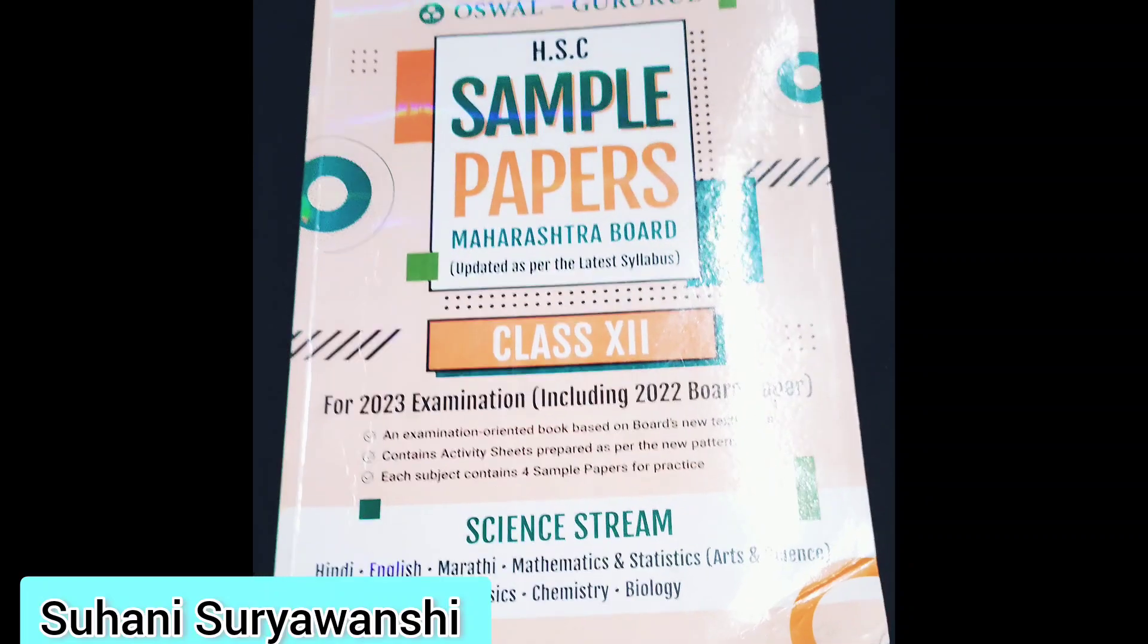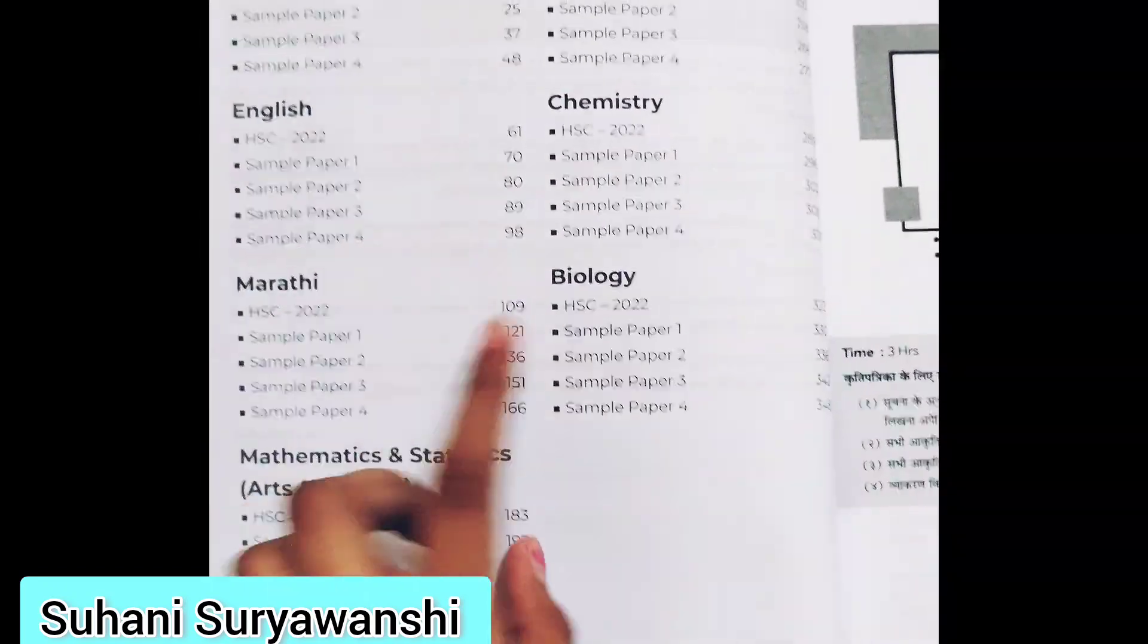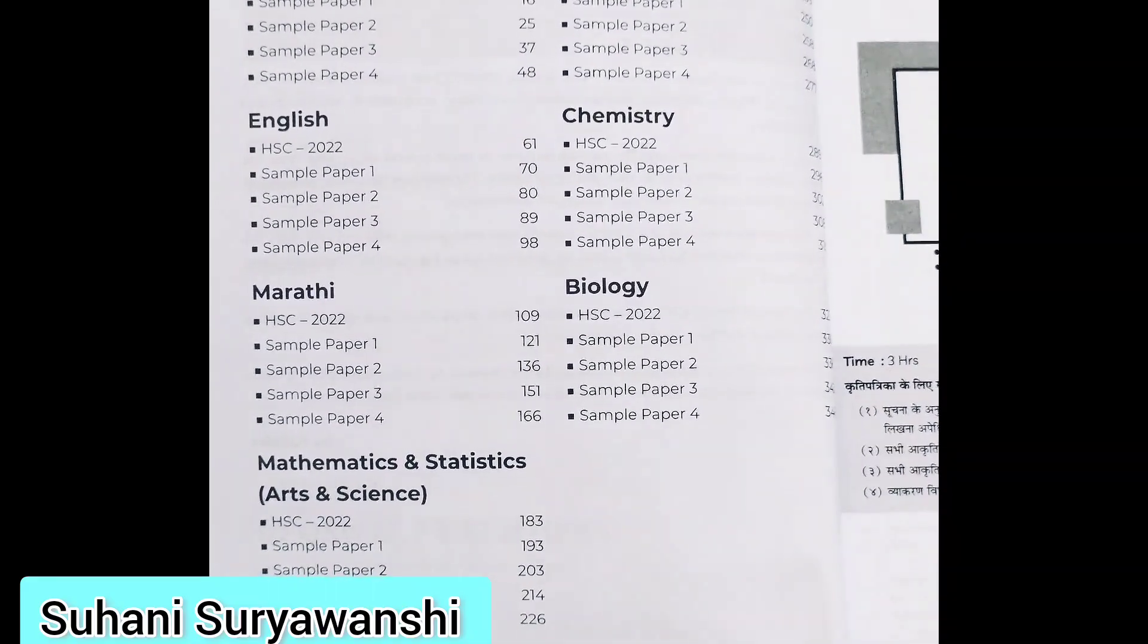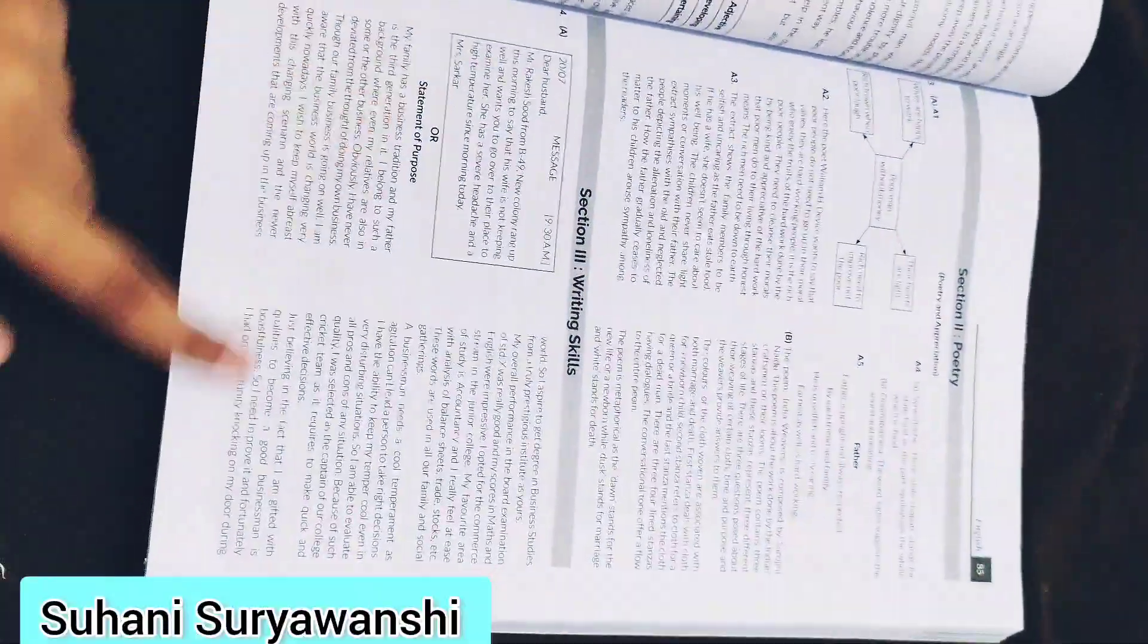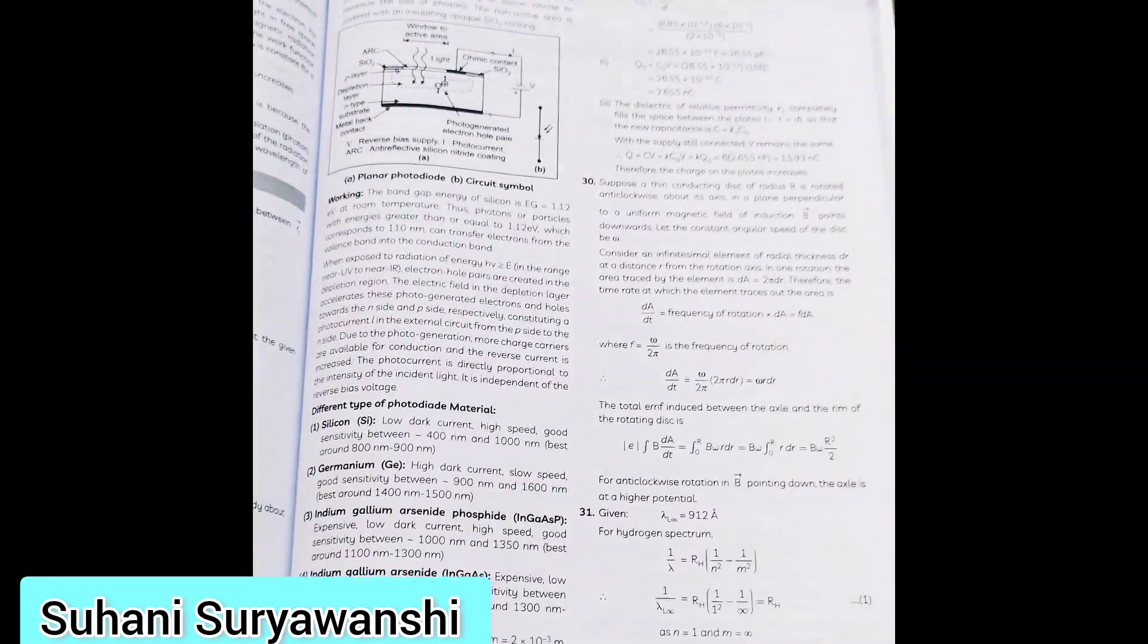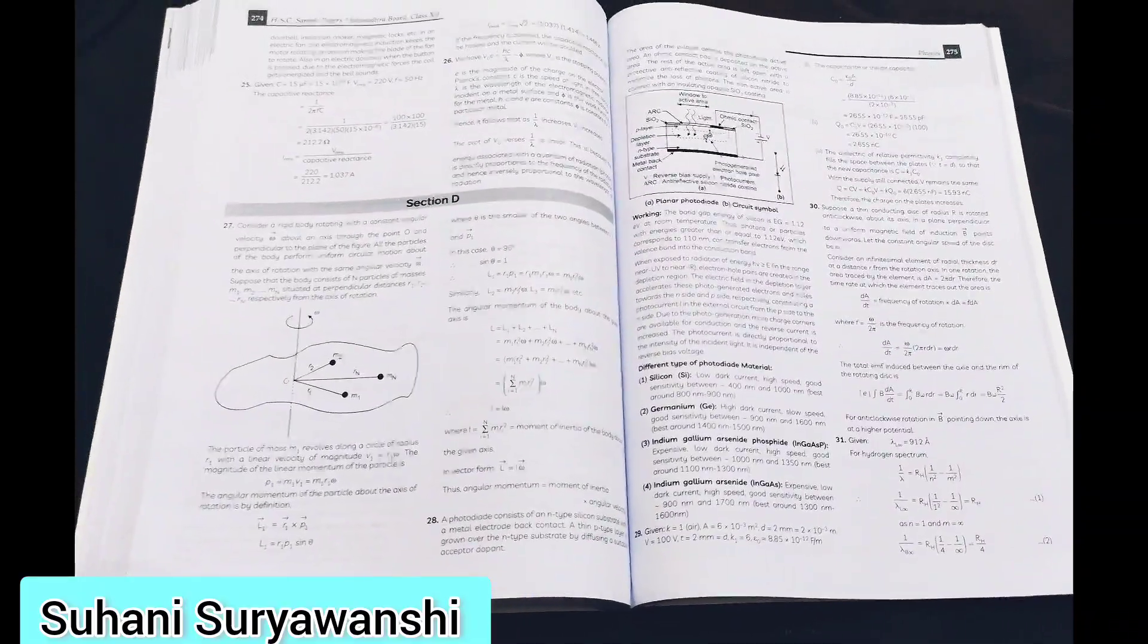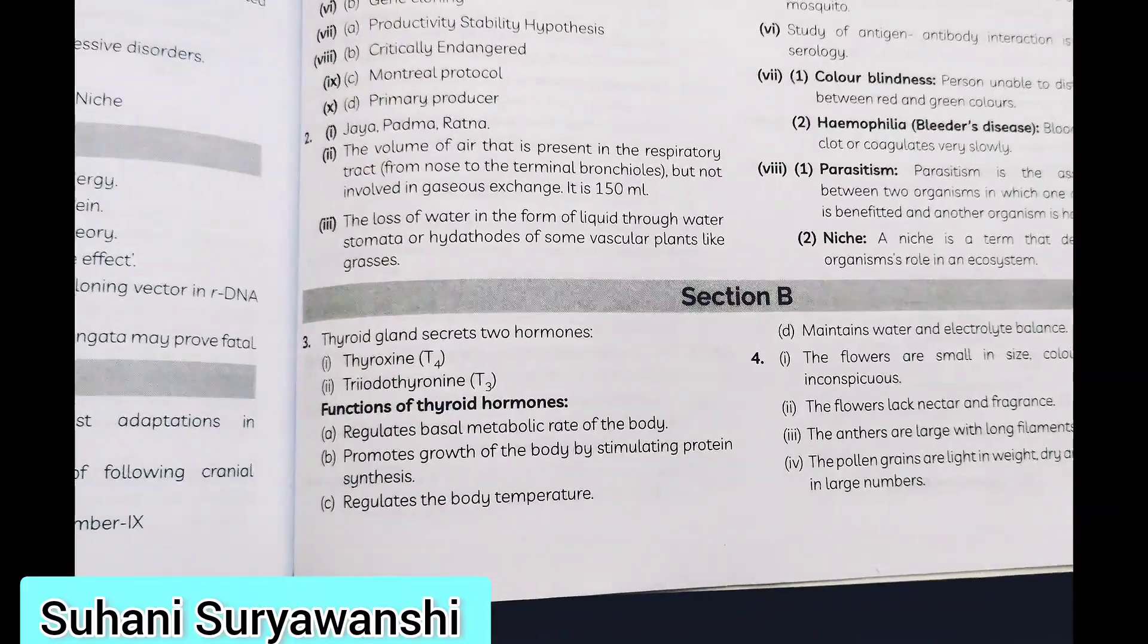I want to tell you about a book from Oswald Publication that I found very helpful. It has previous year question papers from 2022 onwards, all solved, plus four sample papers you can practice. The book covers all subjects - Marathi, Hindi, English, PCMB with writing skills, math, physics with numericals solved step by step. You can check the links in the description box below to see all the answers step by step.